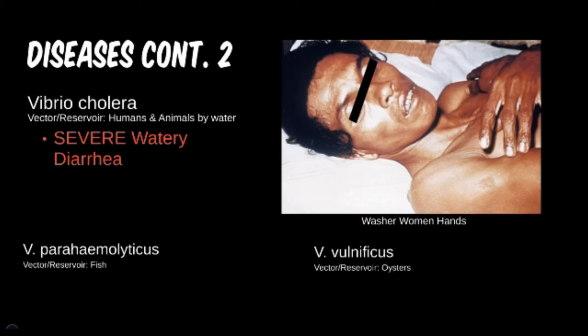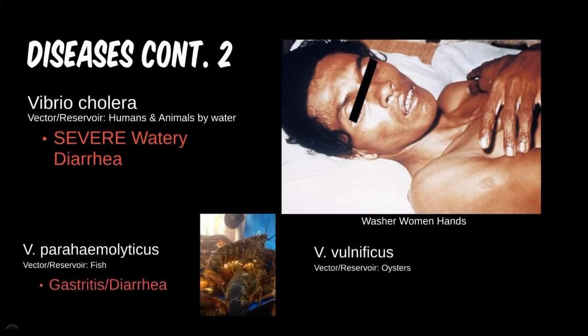We can also briefly mention Parahemolyticus and Vulnificus species. They are much more rare for exams and in reality. The main point to note is that Parahemolyticus is associated with fish and shellfish — you could possibly run into this on a cruise ship, for instance. Vulnificus causes Fisher's Cellulitis and may be seen in oyster farmers.